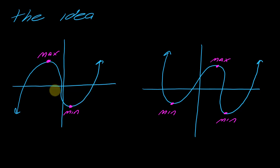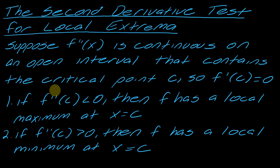This tells us we can use the second derivative to determine maxima and minima. Here is the second derivative test for local extrema. Suppose f double prime is continuous on an open interval containing critical point c, and f prime of c equals zero. If f double prime of c is less than zero, f has a local maximum there. If f double prime of c is greater than zero, f has a local minimum at x equals c.